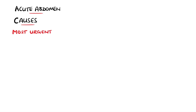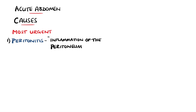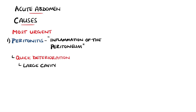Firstly, we have peritonitis, which refers to inflammation of the peritoneum, the lining of the peritoneal cavity. In cases where this is generalized and involves most of the abdomen, it is called generalized peritonitis. Peritonitic patients can quickly deteriorate, and the peritoneum is a large cavity that can hold several liters of fluid, and that, combined with a significant inflammatory response, means that patients can quickly become hypovolemic and enter shock.